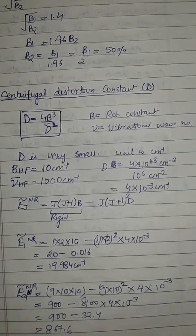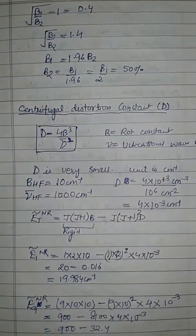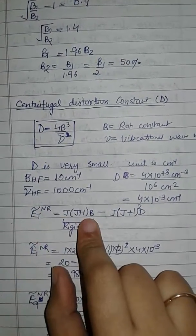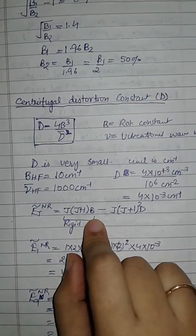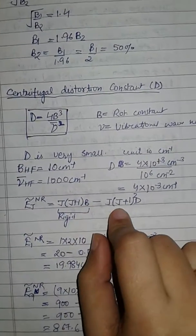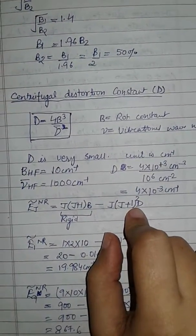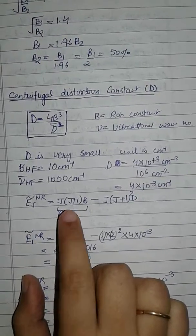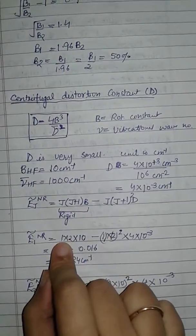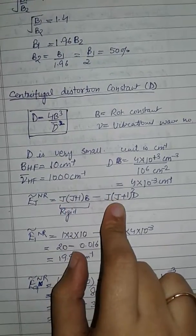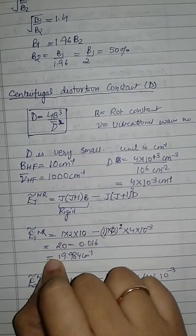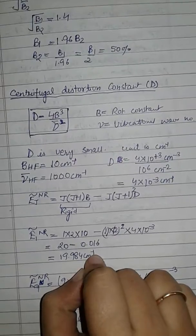Putting the values into the formula gives D = 4 × 10⁻³ cm⁻¹. For the energy of non-rigid rotation, the energy is given by E = J(J+1)B − J²(J+1)²D, where the first term is for rigid rotation and the second term is for non-rigid rotation. For the transition J = 1 to J = 2, putting J = 1 and the value of D, we get 19.984 cm⁻¹.